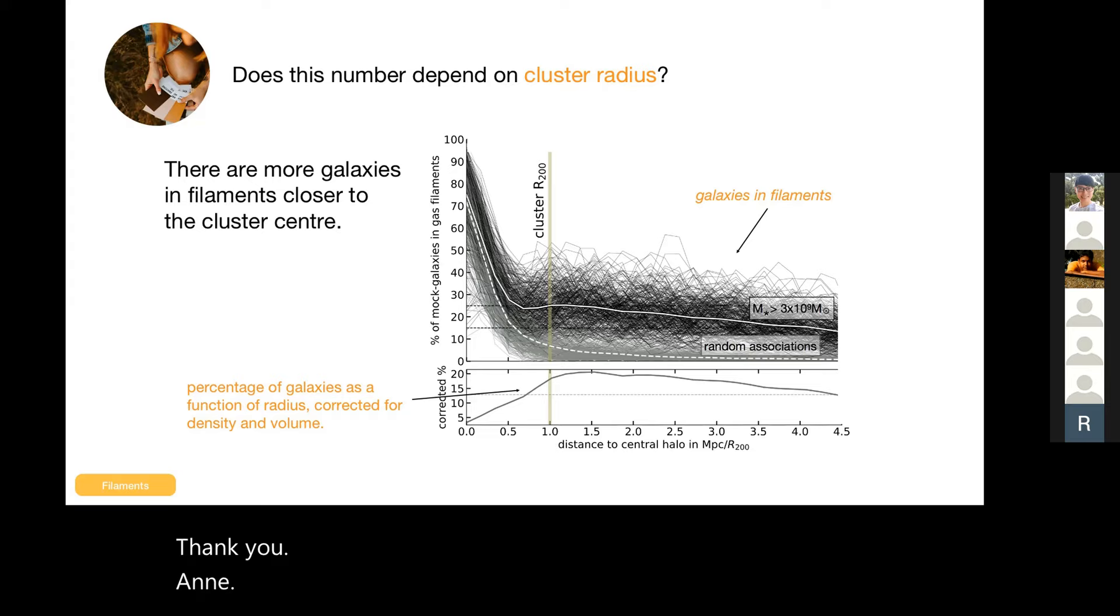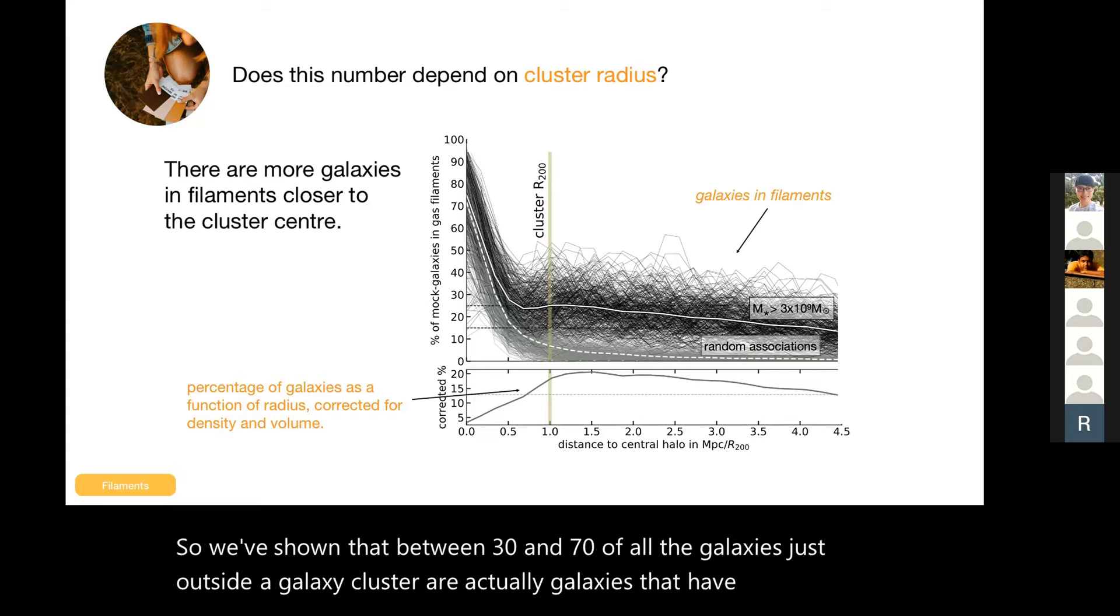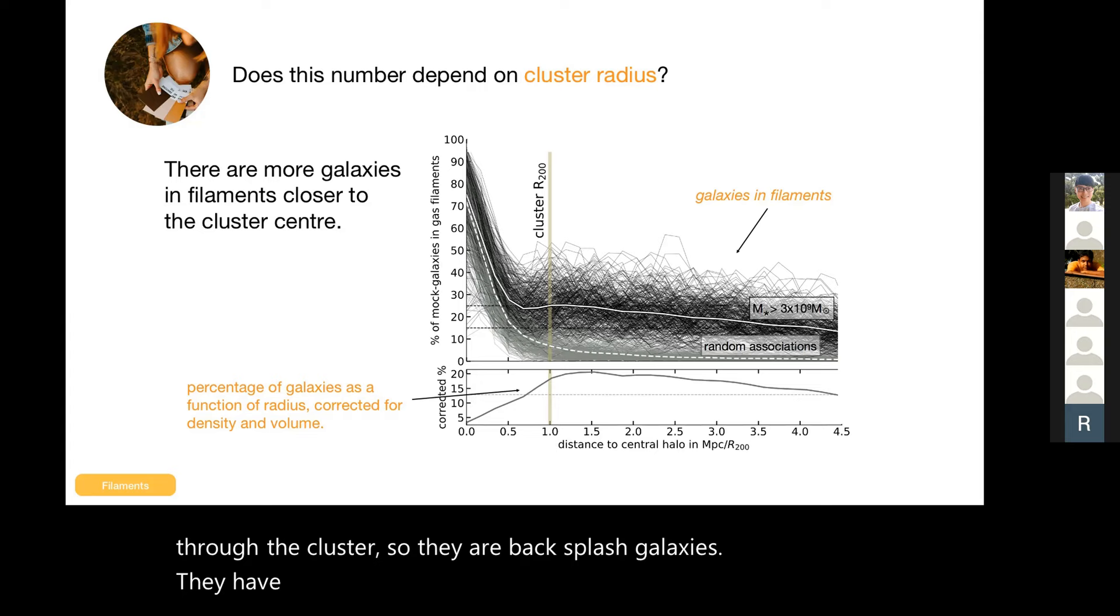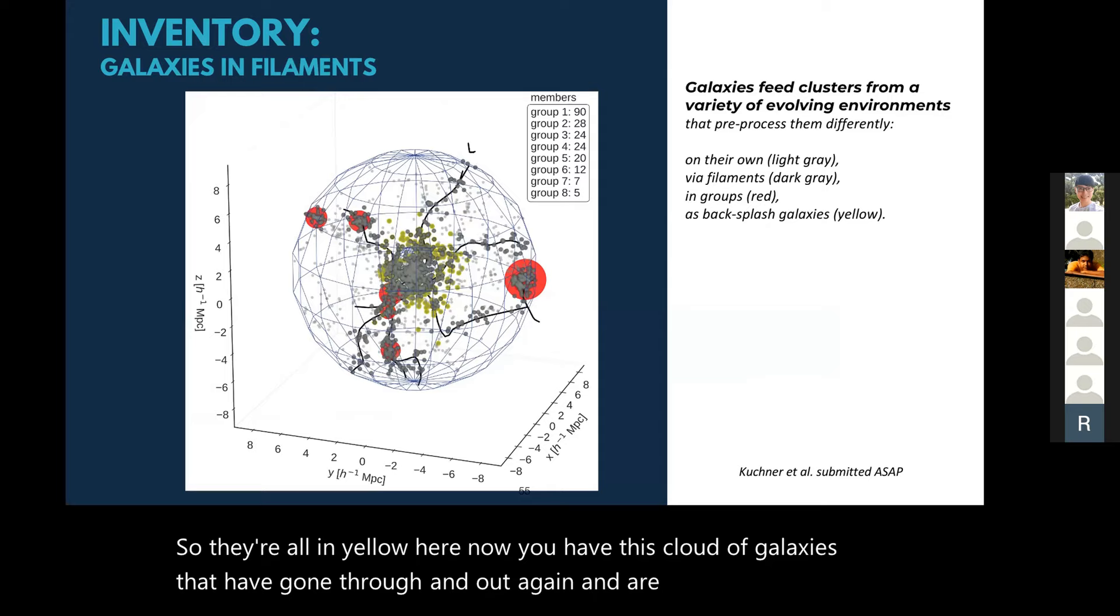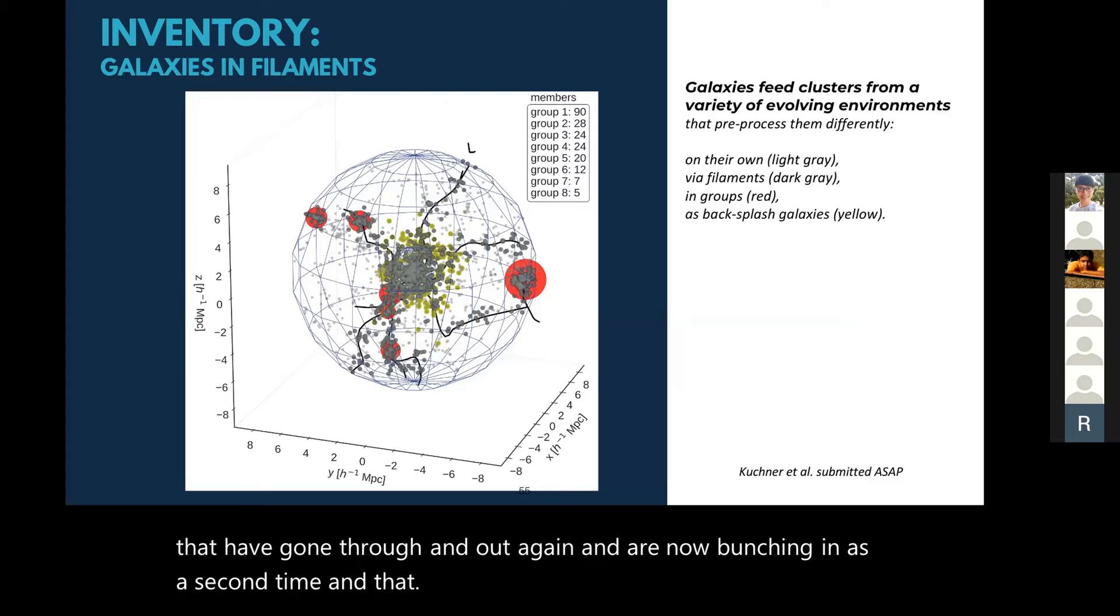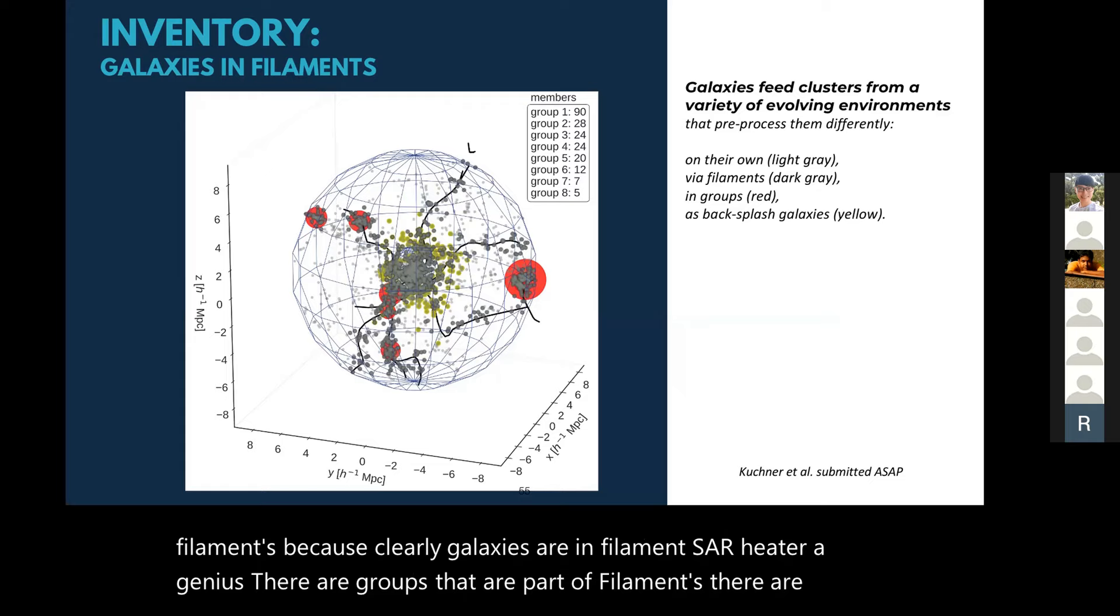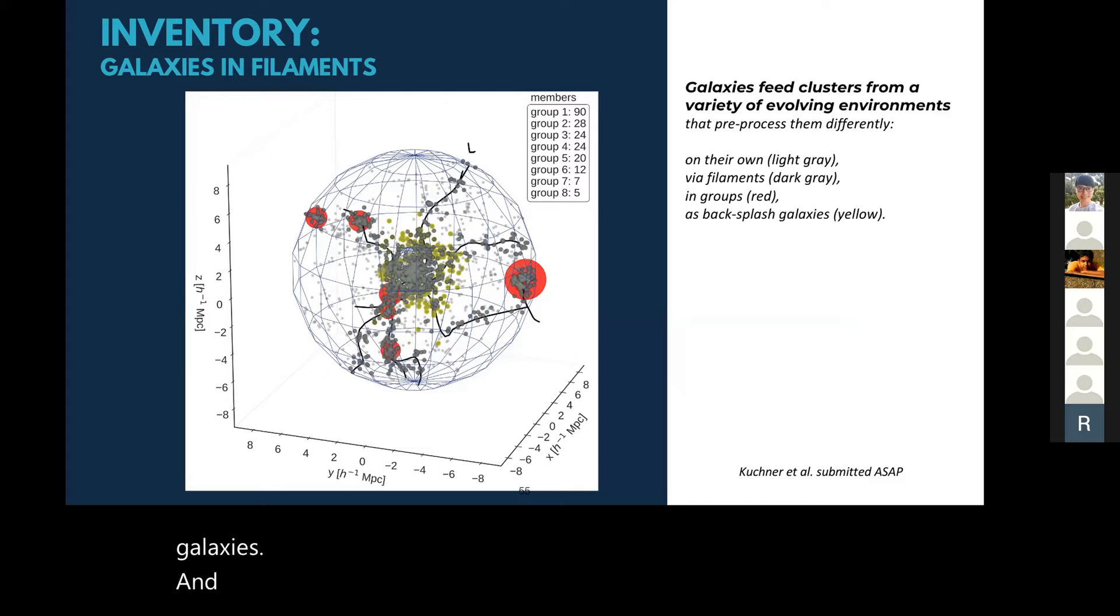We've shown that between 30 and 70% of all the galaxies just outside a galaxy cluster are actually galaxies that have gone through the cluster, so they are backsplash galaxies. They have passed the center of the cluster and are now located just outside. They're all in yellow here now. You have this cloud of galaxies that have gone through and out again and are now bunching in as a second time. That complicates the question of pre-processing and it complicates the question of what kind of galaxies are in filaments, because clearly galaxies in filaments are heterogeneous. There are groups that are part of filaments, there are backsplash galaxies that are part of filaments, and filament-filament galaxies. And that's our latest paper that we looked at.